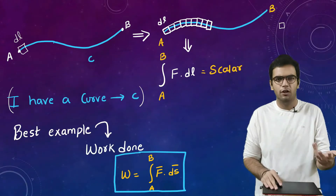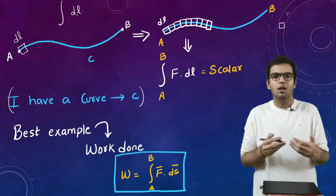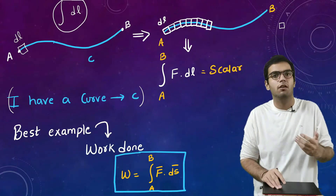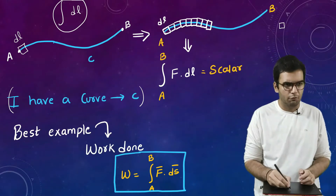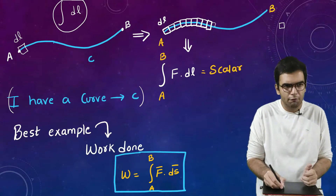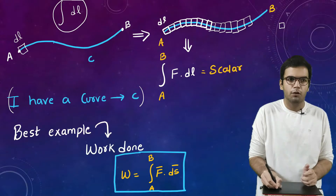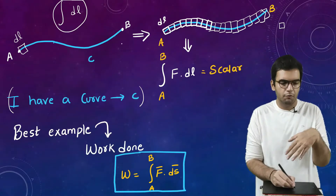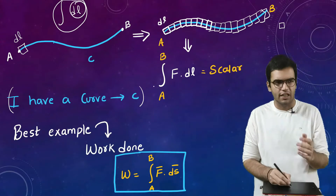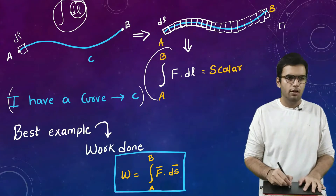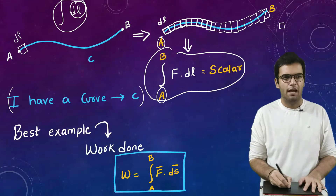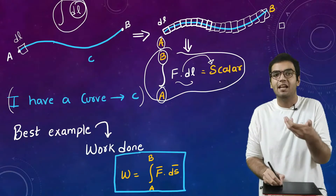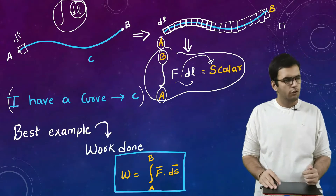Integration basically means combining all the small elements along the curve. When we combine all the small dl elements, we cover the full curve. So what we can calculate directly, we instead take the support of element dl — that is what we do in physics. We put the limits from A to B and write our function as a dot product, which gives a scalar as the answer since dot product is also referred to as scalar product.